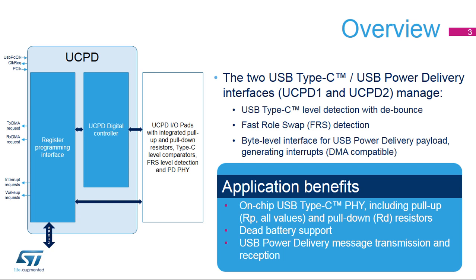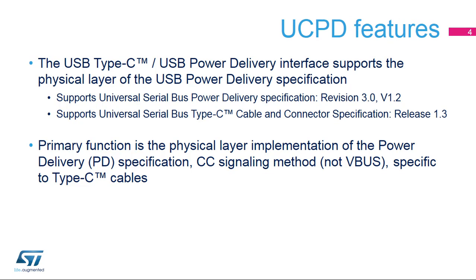Application benefits include an integrated on-chip PD PHY with RP and RD resistors, and dead battery mode support allowing connection detection at the peer device in a dead battery situation. PD message transmission and reception — software is only in charge of handling the payloads. The UCPD controller is compliant with USB Type-C Revision 1.2 and USB Power Delivery Revision 3.0 specifications. Regarding the PHY, only the CC signaling method is supported, so a Type-C cable is required.